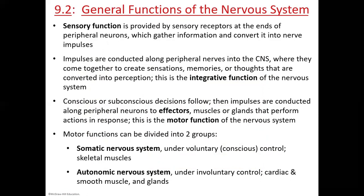Sensory neurons at the end of your peripheral neurons gather information and convert it to a nerve impulse — basically an action potential. For example, light waves hit the rods and cones in your eye and get converted into a chemical signal. Sound waves convert vibration into a signal. Pressure receptors in your skin convert physical touch into a signal. Taste molecules lock into receptors on your tongue. We actually have hundreds of senses, not just five.